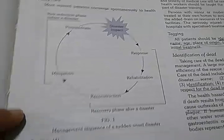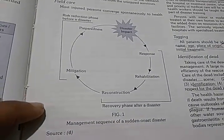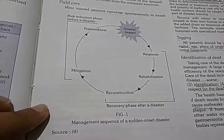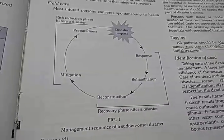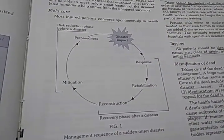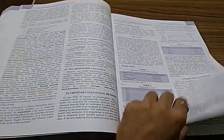Air pollution is extensively covered. There is the management sequence of sudden onset disaster — the disaster cycle — covering how to manage earthquakes and similar events. Then chromosomal abnormalities — that looks easier since we know a lot about it. A few more pages without images and we reach the end.